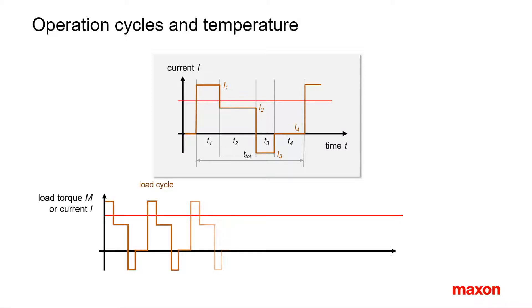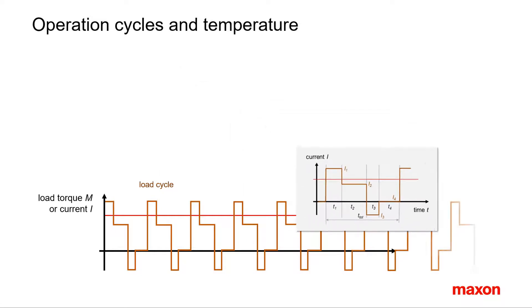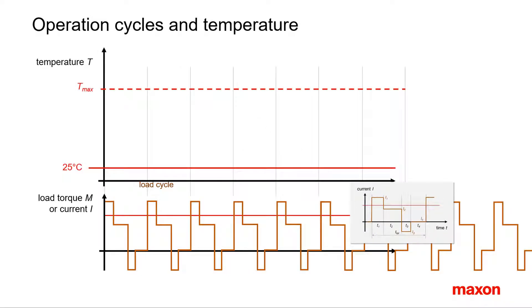The question that arises is, what will happen to the temperature if we want to constantly repeat this operation cycle? During the high load in phase 1, the temperature will increase strongly, while in phases 2 and 3 the thermal load is smaller. In phase 4 the motor has time to cool down, since there is no current. However, repeating this cycle permanently will heat up the motor. In the end, the motor temperature will vary slightly around an average value.